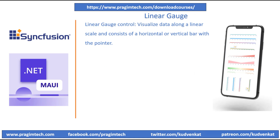In this session, we will focus on understanding the linear gauge control. Linear gauge control is a graphical user interface element used in software applications to represent visualized data along a linear scale. It typically consists of a horizontal or vertical bar with a pointer or indicator that moves along the scale to represent the current value. Linear gauges are commonly used in dashboards, monitoring systems and data visualization applications to display metrics such as temperature, speed, progress or any other continuous data.